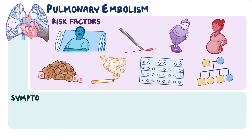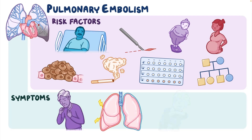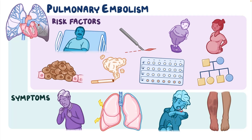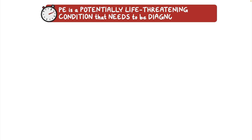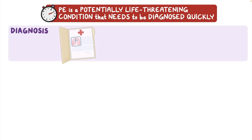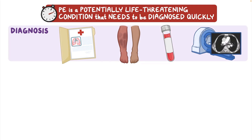Signs and symptoms usually include difficulty breathing, pleuritic chest pain, hemoptysis, as well as calf tenderness and swelling in cases where a DVT is present. PE is a potentially life-threatening condition that needs to be diagnosed quickly. Diagnosis starts with the patient's history, physical findings, and/or laboratory tests, and is typically confirmed with CTPA.